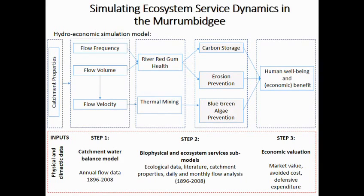We're interested in three ecosystem services — and this is by no means exhaustive, but they're on the top of our radar because they're easily quantifiable. We're interested in carbon storage in floodplain river red gums; their erosion prevention abilities along the riparian corridor, which are a direct function of their health; and we know that healthy trees store more carbon than dead trees lying on the ground. Likewise, healthy riparian vegetation has a greater bank-stabilising effect than bare or unhealthy riparian vegetation. That links back to the two hydrological indicators we're interested in: volume and frequency.